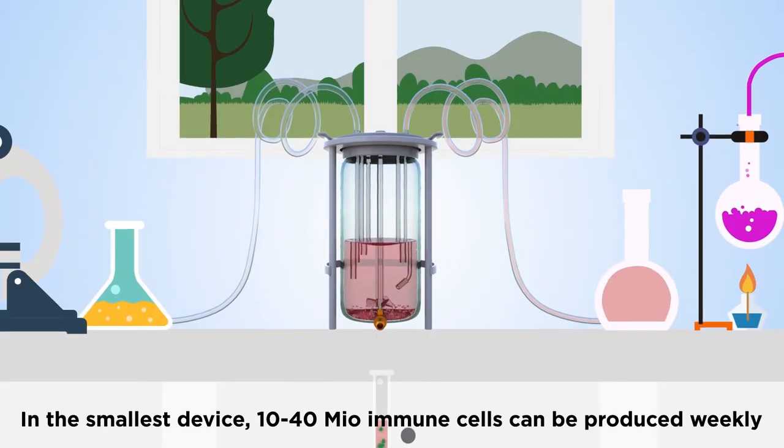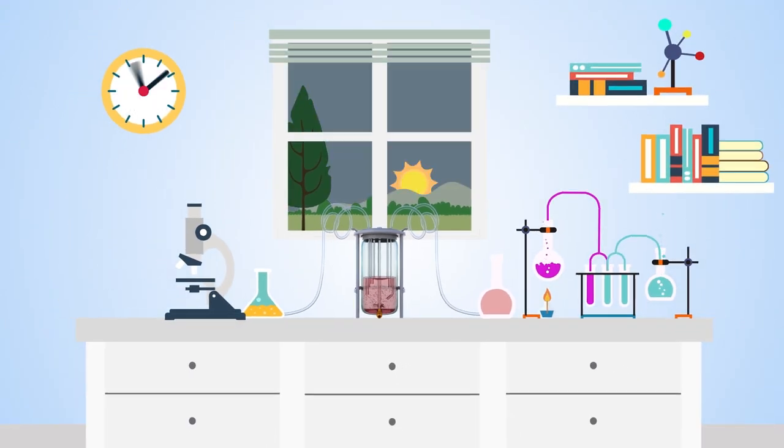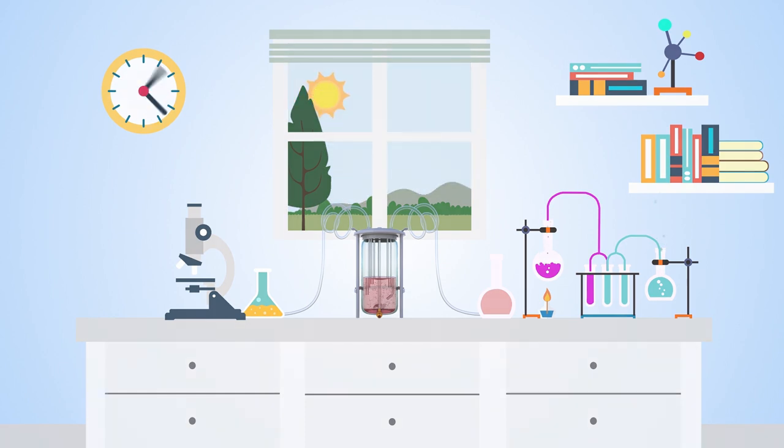The smallest 100mL device produces up to 40 million cells per week as part of a suspension-based, continuous hematopoietic cell production platform.